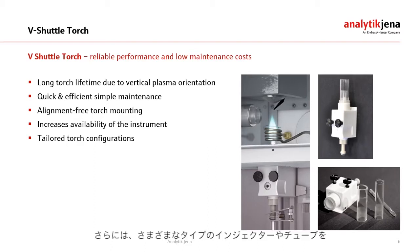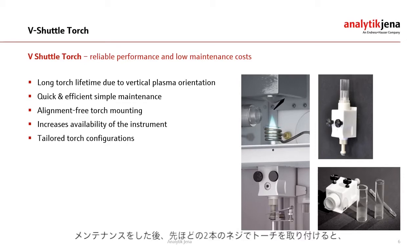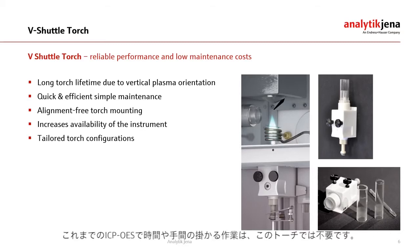Another advantage of a fully demountable torch is that you can use tailored torch configurations by employing different types of injector and tube materials. The torch itself can be easily removed by loosening just two screws. After maintenance, the torch is assembled again via these two screws and will then be aligned automatically by our unique shuttle mechanism. Time-consuming alignment procedures like those on other ICP-OES instruments are things of the past with this torch.